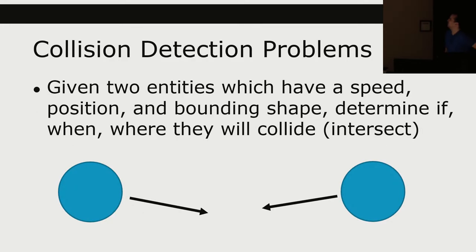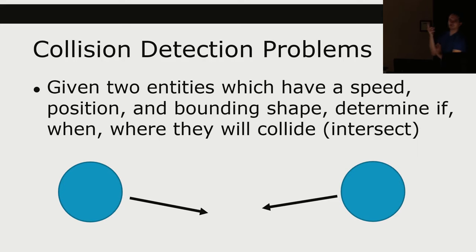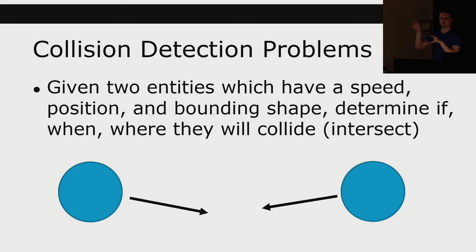Collision detection problems: given two entities with a speed or velocity, position, and bounding shape, determine if they will collide, when they will collide, or where they will collide. That is one problem — if you have these two things with these properties, will they collide in the future? That is a problem we will not be doing in this course, and it's not the way the majority of physics programming is done.